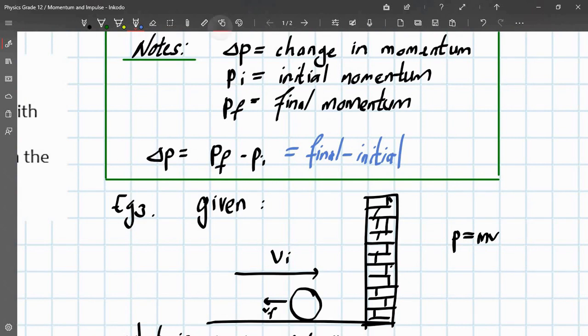So, there's some definitions here and symbols. This sign here means change in. So, we have the change in momentum. pf is final momentum. Change in momentum is final momentum minus initial. Just remember it's the final minus initial. Not initial minus final. Final minus initial.